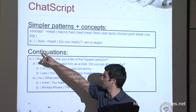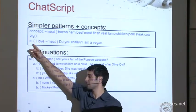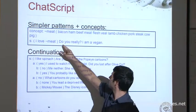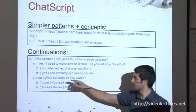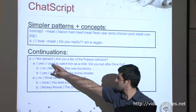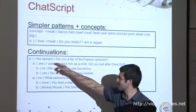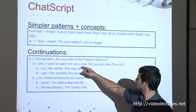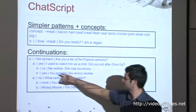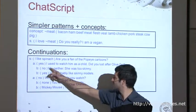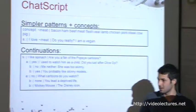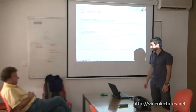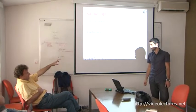This is an example of ChatScript. They define a concept of 'meat' — basically all the words for meat. Then there is the pattern: if you have the sentence 'I love [concept of meat],' it will reply 'Do you really?' And this is the example of continuation: if you say 'I like spinach,' it asks 'Are you a fan of Popeye cartoons?' and if you reply yes, it will ask more and so on. You can do follow-up conversation. It's pretty much the same as Eliza from 1966 — it was exactly the same. That's why there wasn't much progress. They are adding WordNet, synonym lists, name lists, and so on.